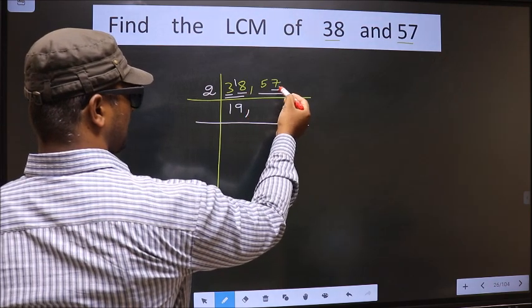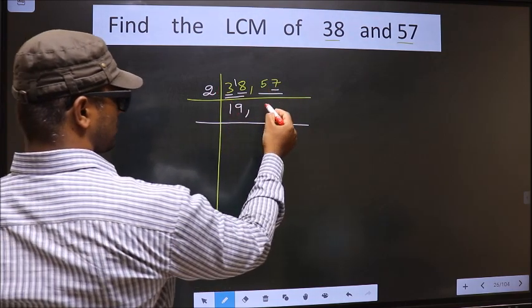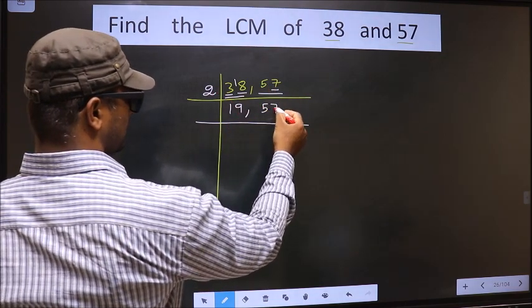Now the other number, last digit 7, not even, so this number is not divisible by 2. So we write 57 as it is.